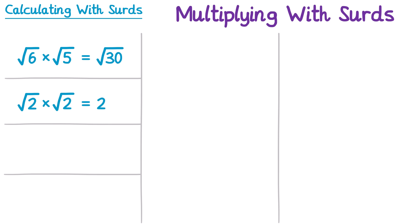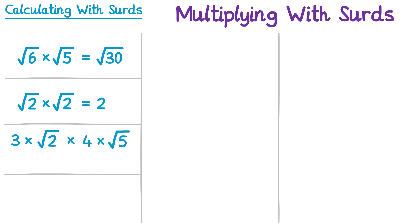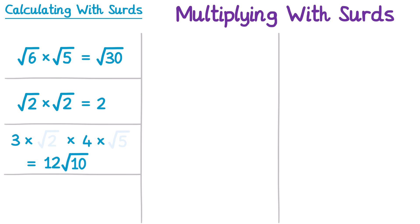What if we multiply two surds together that have already been simplified? Something like 3 root 2 multiplied by 4 root 5. Let's put the multiplication symbols back in: it's 3 times root 2 and 4 times root 5. We multiply the integers — 3 times 4 gives 12 — and then multiply the surds: the square root of 2 times the square root of 5 gives the square root of 10. So the answer is 12 root 10.